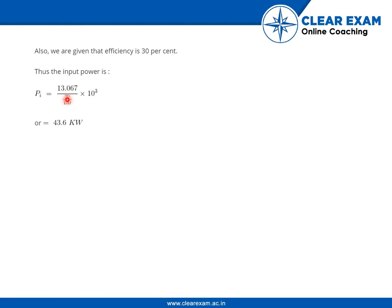If the input efficiency is 30 percent into 10³, it is coming out to be 43.6 kilowatt.